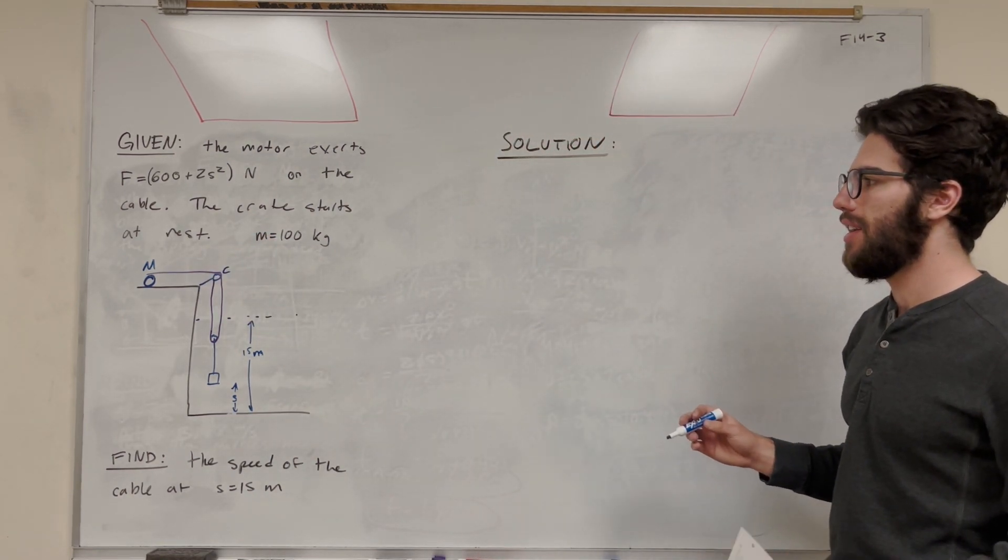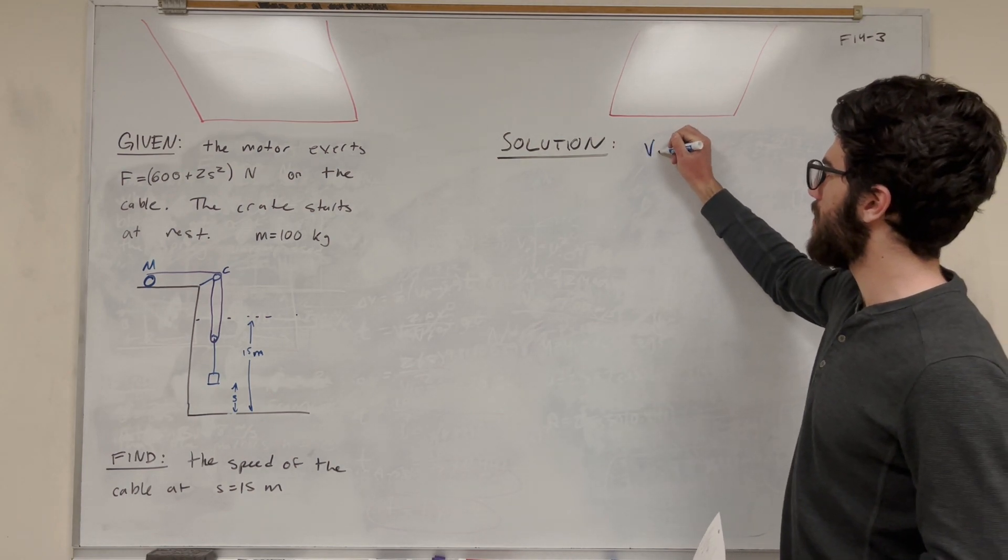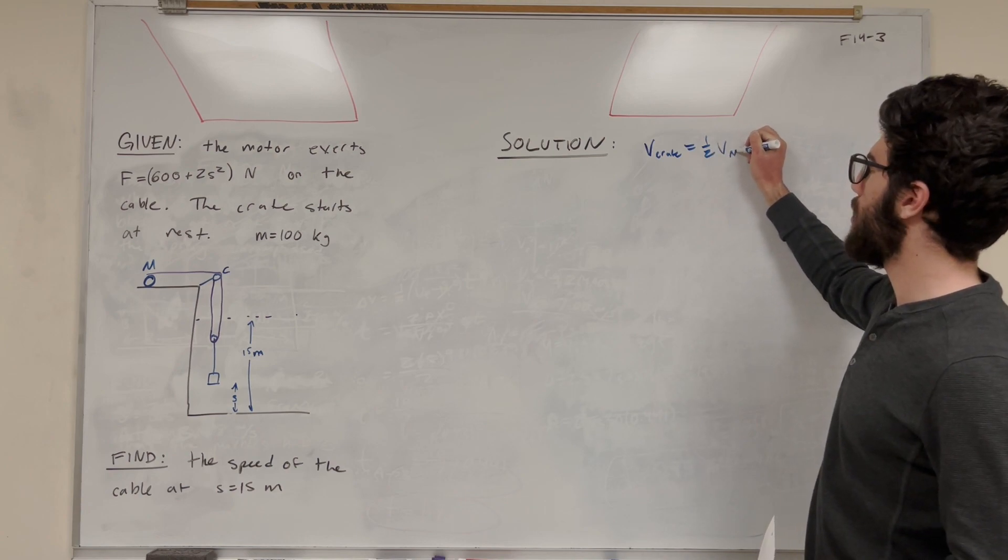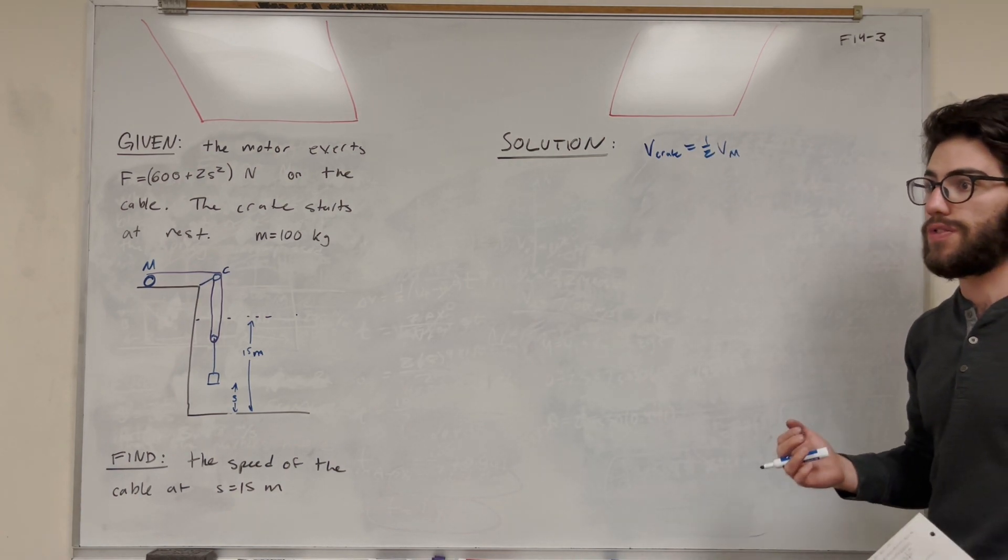I could run through the whole thing, but it's pretty easy just to tell from intuition. So we can label that the V of the crate. Velocity of the crate is half the velocity of the motor. So this is going to come in useful later.